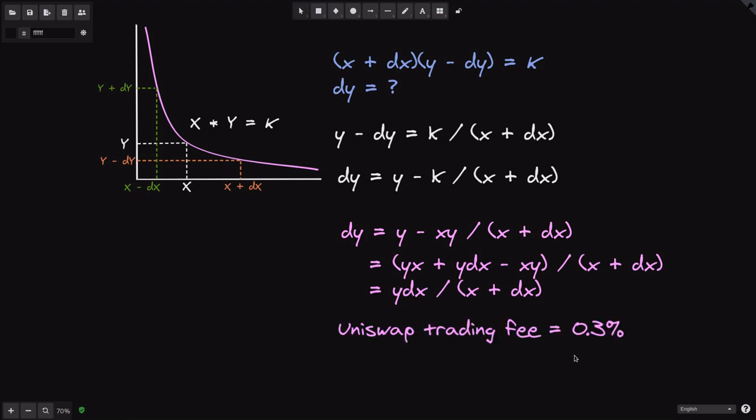Uniswap has a trading fee of 0.3%. So the actual value for DY will equal to Y times 0.997 times DX divided by X plus 0.997 times DX. And that is the equation that you'll see inside the code for Uniswap.